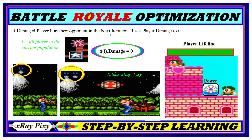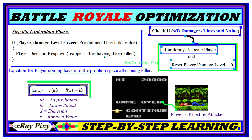In video games, certain powers are given to players between phases, or while searching their surroundings they can explore resources and refill their life. This behavior is captured as: if a damaged player hurts their opponent in the next iteration, we reset the player damage to zero. That is, for any player being hurt by another, if in the next iteration it hurts another player, its damage level is reset to zero. Step six is the exploration phase.